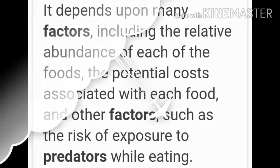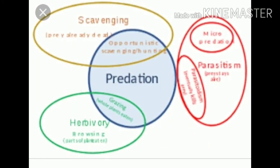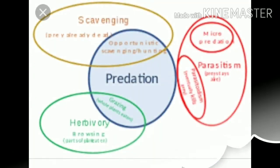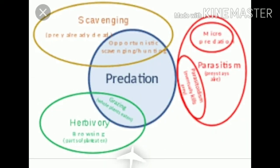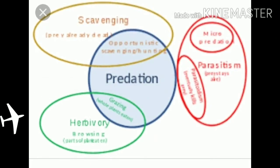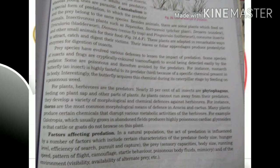Factors affecting predation: In a natural population, the act of predation is influenced by a number of factors. These include certain characteristics of the predator — body size, hunger level, efficiency of search and capture — and characteristics of the prey — sensory capacities, body size, running speed, pattern of flight, camouflage, behavior, poisonous body fluids, and mimicry — as well as environmental factors such as visibility and availability of alternate prey.